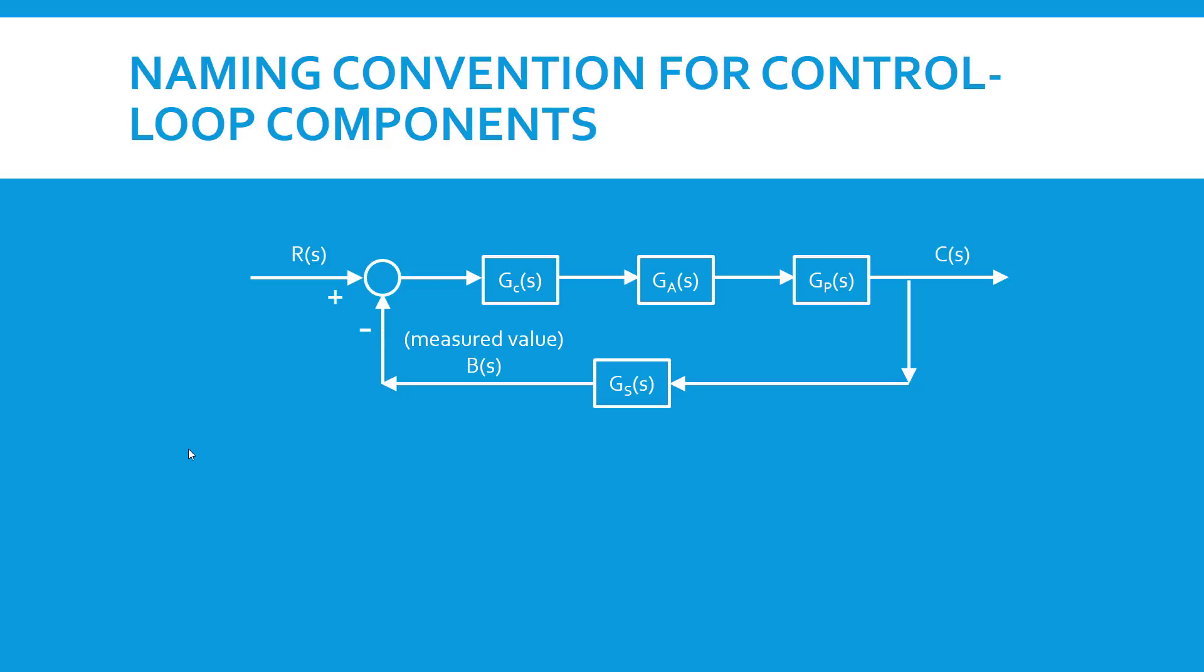The next thing that we do in a feedback control loop, we see the feedback path here. The sensor produces B, the measured value, and it's compared with R(s), which is the desired value and produces what's called an error. Now it's not error in terms of a mistake. It's error in terms of a deviation where the measured value deviates from the desired value. We name that the error.